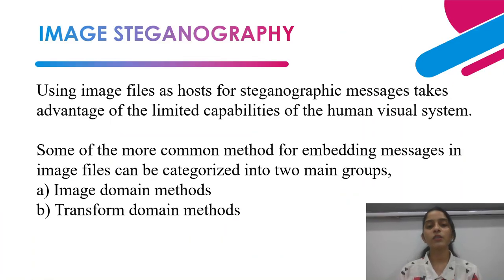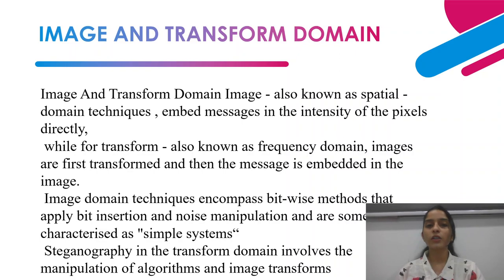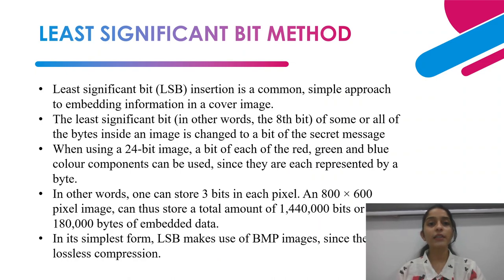Now comes image steganography. In image steganography we use an image as the cover file — we hide our message behind an image. The main methods are image domain methods and transform domain methods. In the image domain, we embed the message directly in the intensity of pixels. In the transform domain, we transform the image and then embed the message using algorithms and image transforms. Image domain methods include bit insertion and noise manipulation.